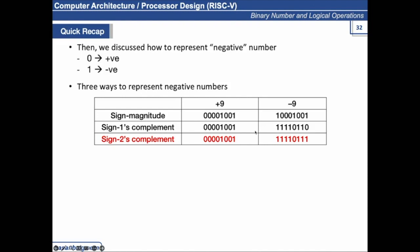For sign 1's complement, to calculate the 1's complement of +9 you just flip all the bits. For sign 2's complement, you keep the first least significant 1 unchanged and flip all other bits — this gives the representation of minus 9 in 2's complement. The reason 2's complement is highlighted is that it is the method actually used in computers. Why 1's complement and sign magnitude are not used will be discussed in the next slides.